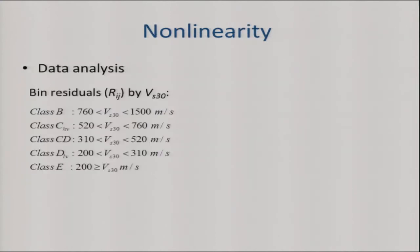We performed a regression to extract the nonlinearity parameters across period and VS30. For comparison, I'm also showing the Choi and Stewart 2005 model. The slope is plotted against VS30 for California, Japan, and Taiwan, and combined. You can see how things become more nonlinear as you get to softer soils.